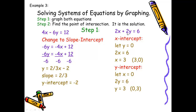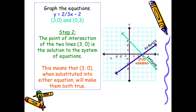For the second equation, 2x plus 2y equals 6, I'll keep it in standard form and find the x and y-intercepts. To find the x-intercept, I let y equal 0, giving 2x equals 6, so x equals 3 — the x-intercept is (3, 0). To find the y-intercept, I let x equal 0, giving 2y equals 6, so y equals 3 — the y-intercept is (0, 3). Now that I've rearranged the equations and found the intercepts, I can graph them.